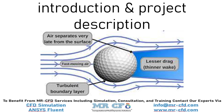The dimples on the surface of a golf ball cause the boundary layer on the upstream side of the ball to transition from laminar to turbulent. The turbulent boundary layer is able to remain attached to the surface of the ball much longer than a laminar boundary, and so creates a narrower low pressure wake and hence less pressure drag. The reduction in pressure drag causes the ball to travel farther.